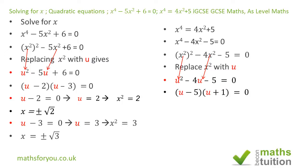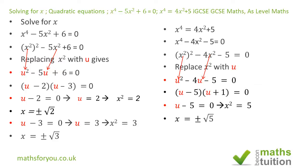Factorizing gives u minus 5 into u plus 1 equals 0. Equating u minus 5 to zero, u equals 5, therefore x squared equals 5. Taking the square root of both sides, x equals plus or minus root 5.